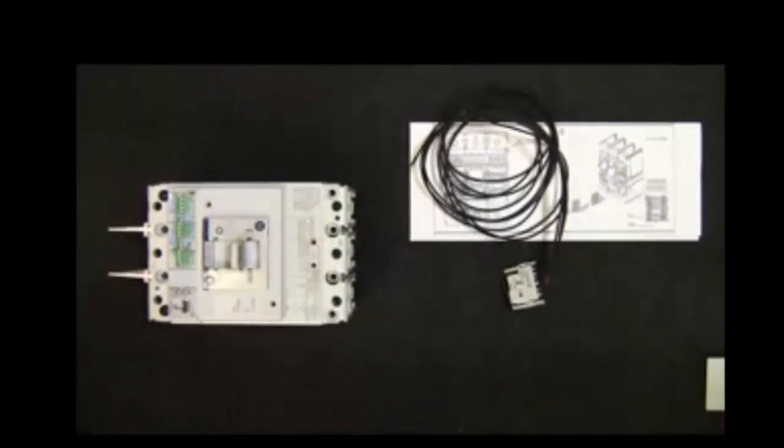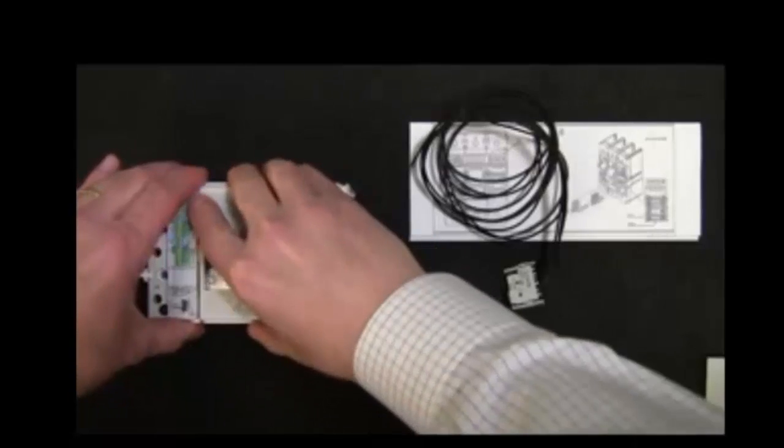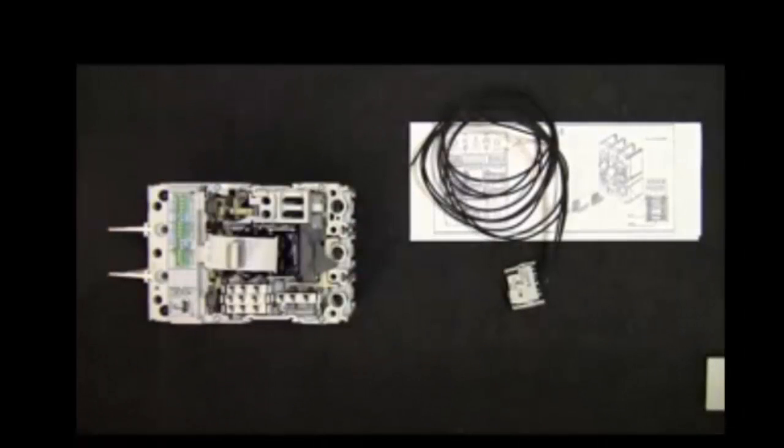Now simply remove the faceplate by firmly lifting and sliding the cover towards the top of the breaker. Set the screws and faceplate off to the side so that we can reinstall them in a few moments. If your breaker includes plugs protecting the slots, you can remove and dispose of those you will be replacing with an auxiliary contact.